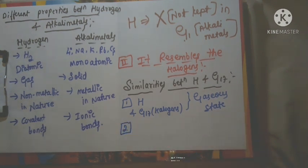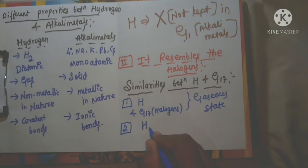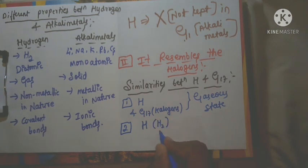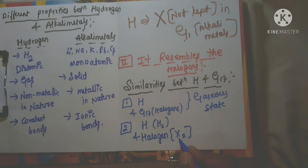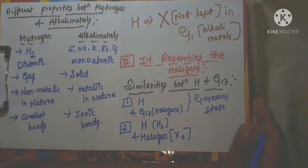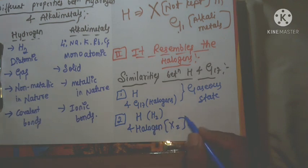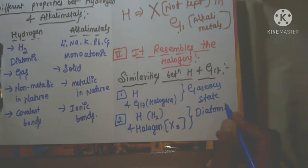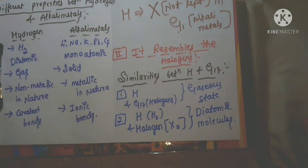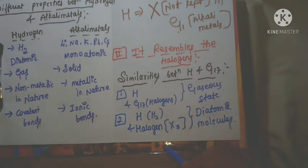The second similarity: hydrogen exists as H2, which is diatomic. Halogens also exist as diatomic molecules — F2, Cl2, Br2, I2. So both hydrogen and the halogens exist as diatomic molecules. This is the second similarity between hydrogen and halogens.